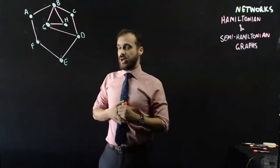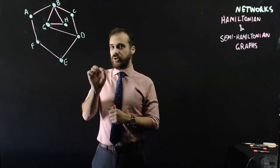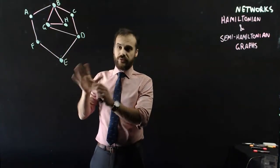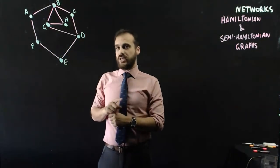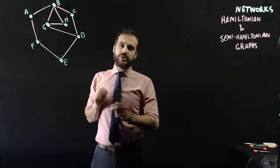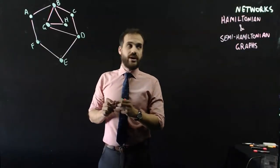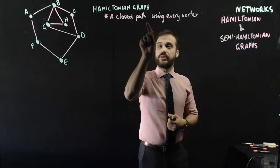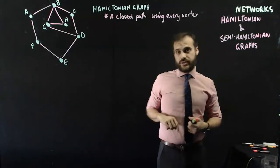Hamiltonian graphs are interested in vertices. The goal here is to get the entire way around the graph touching every vertex, but only touching every vertex once, except the one that you start and you finish on. So, a Hamiltonian graph has a closed path using every vertex.